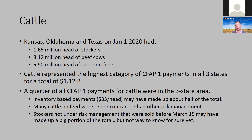These inventory-based payments made up about half of the total. There were a lot of cattle on feed that were under contract or had other risk management, so even though there were very high payments per head for cattle on feed reflecting supply chain disruptions, there was also significant risk management usage in that group. Stockers not under risk management that were sold before March 15th may have made up a good portion of that total, but there's no way to know for sure. They don't break the numbers down enough, and we don't have data on how many producers sold their cattle before March 15th versus holding them past that deadline — because at the time those decisions were made, we didn't know those would be the cutoffs.